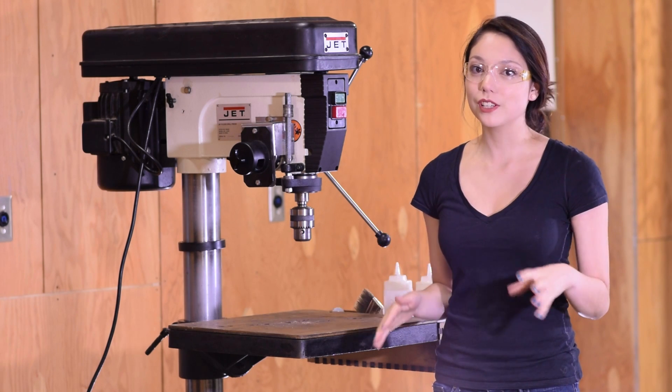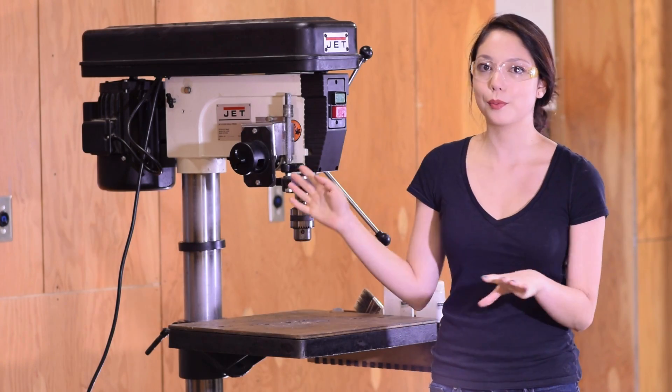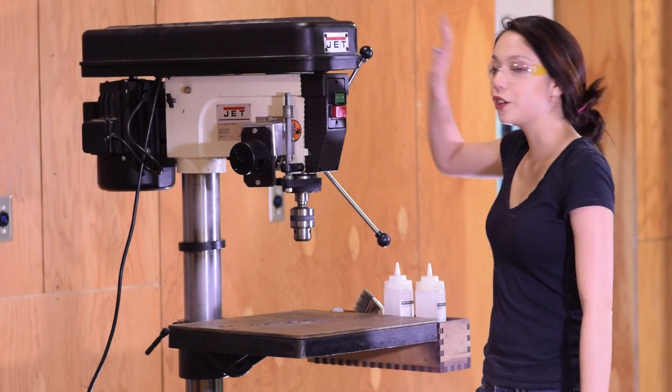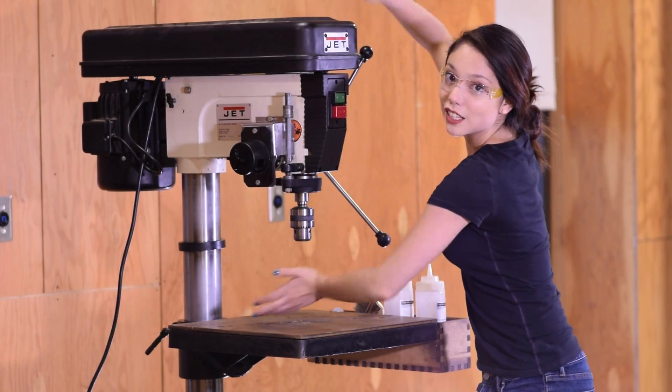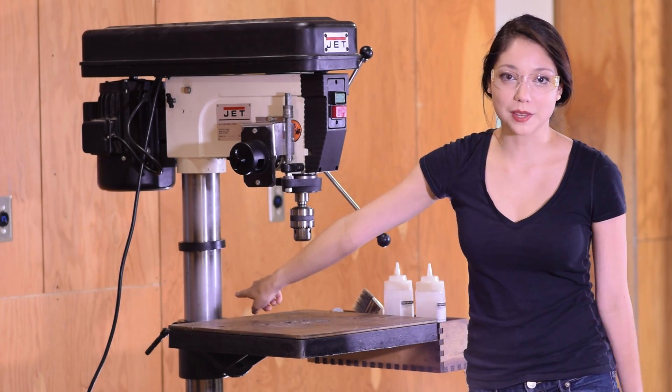Alright, so drill press layouts are roughly the same going from machine to machine. So whatever we say here probably applies to the machine that you're working on as well. As a rough review, you've got your head of the drill, which is this chunk of stuff here, you've got the table, you've got the base, and then the column in the back.